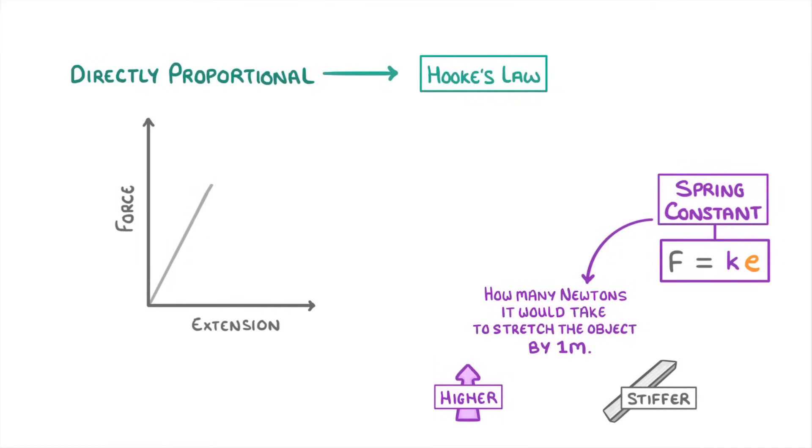There is a limit to this relationship though. At some point our line will start to curve, and we call this point the elastic limit, or the limit of proportionality. After this point, Hooke's law no longer applies, and the object won't necessarily go back to its original shape, meaning that it would have been inelastically deformed.